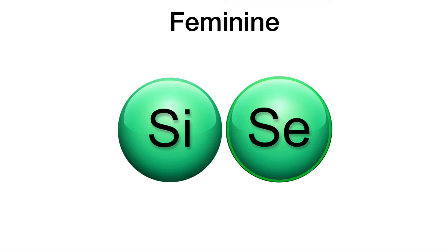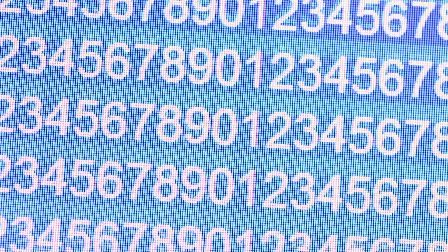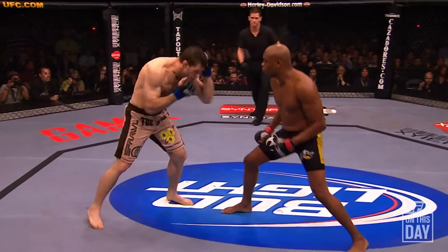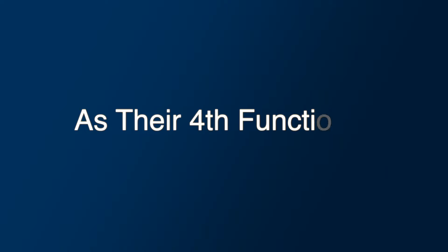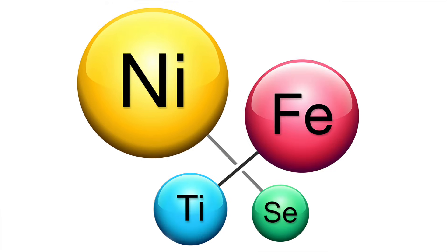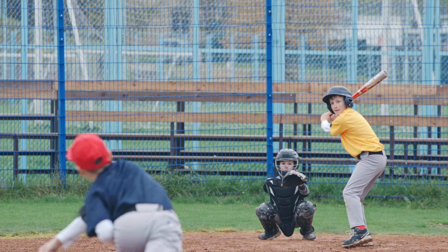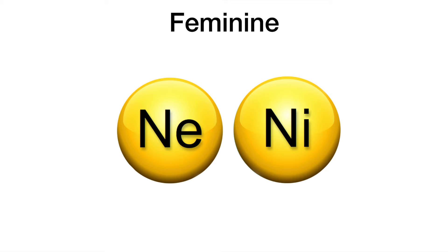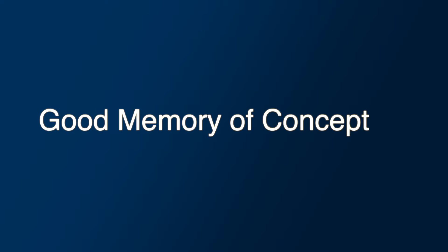Someone with feminine SI and SE are more forgetful with facts, numbers, and details, while those with masculine SI and SE will have very good memory for facts, numbers, and details. Feminine SI and SE don't see the physical world as a threat and can navigate whatever happens with more finesse, unless they have it as their port function like INTJs and INFJs. Those with masculine SI and SE are more punchy with the physical world and are more likely to throw, hit, smash, or grab things. Finally, those with feminine NI and NE are more forgetful with patterns, concepts, and pathways, while those with masculine NI and NE feel very confident and have a good memory when it comes to patterns, pathways, and concepts.